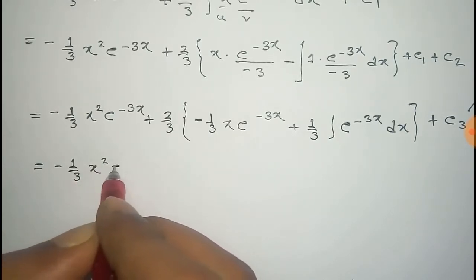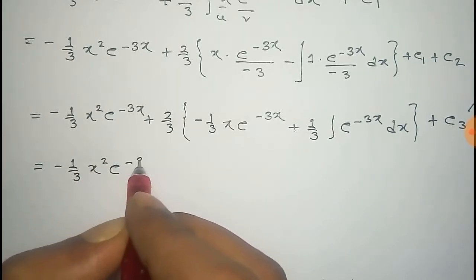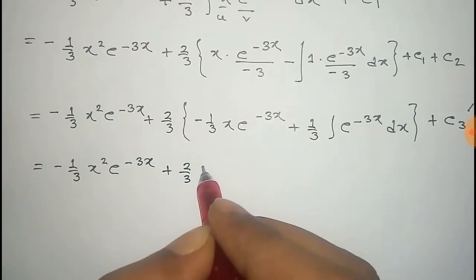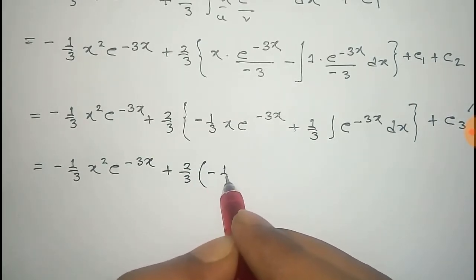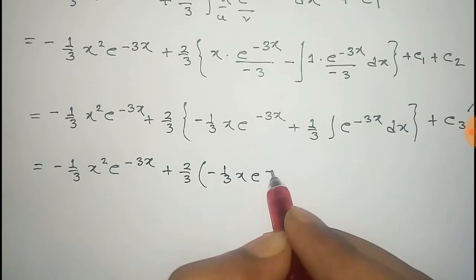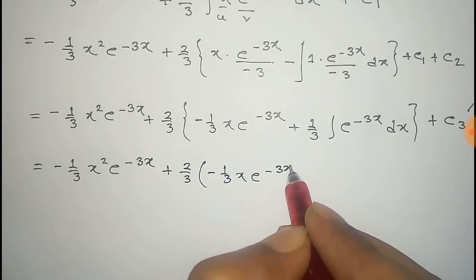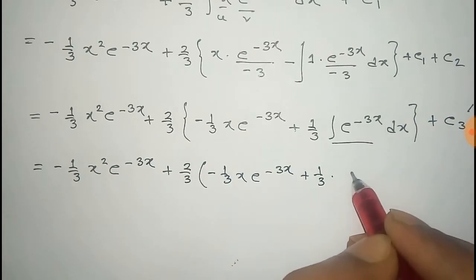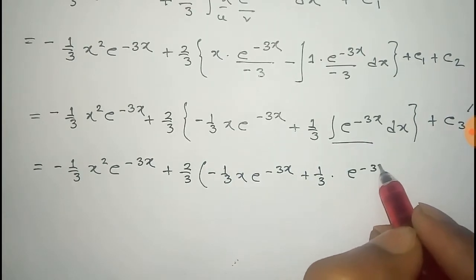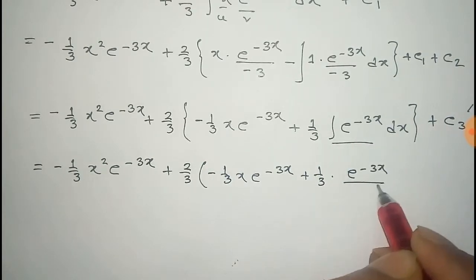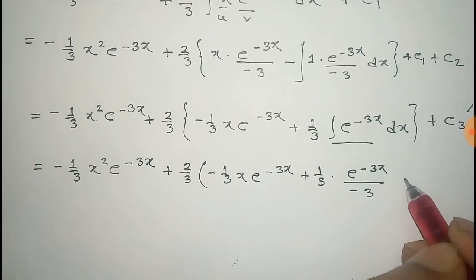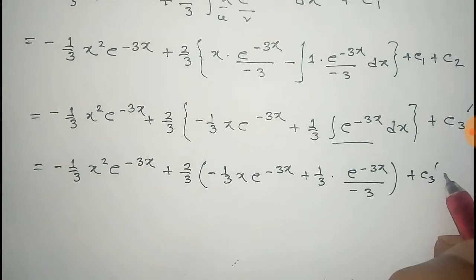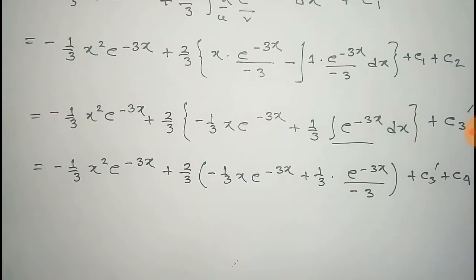That is equal to minus one third x squared e to the power minus 3x, plus two thirds into minus one third x e to the power minus 3x, plus one third. The integral of e to the power minus 3x equals e to the power minus 3x by minus 3, plus constants c3 prime and c4.